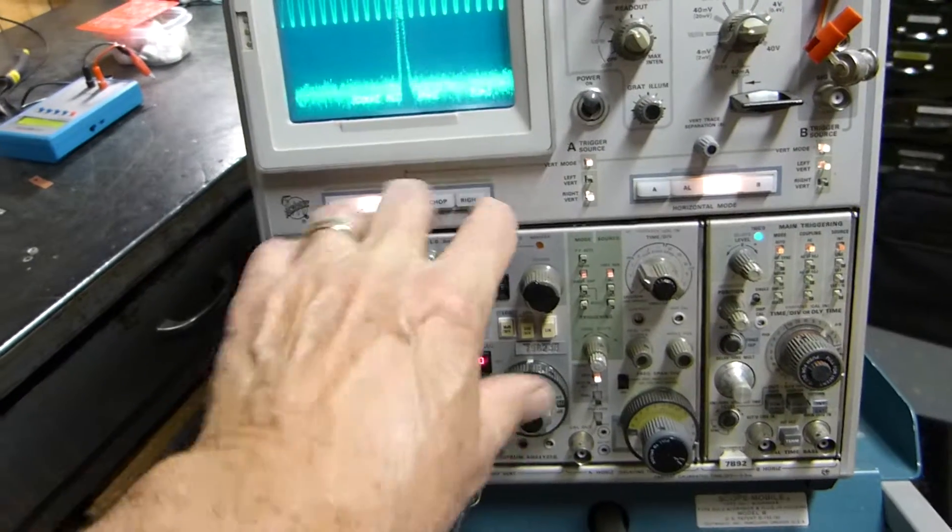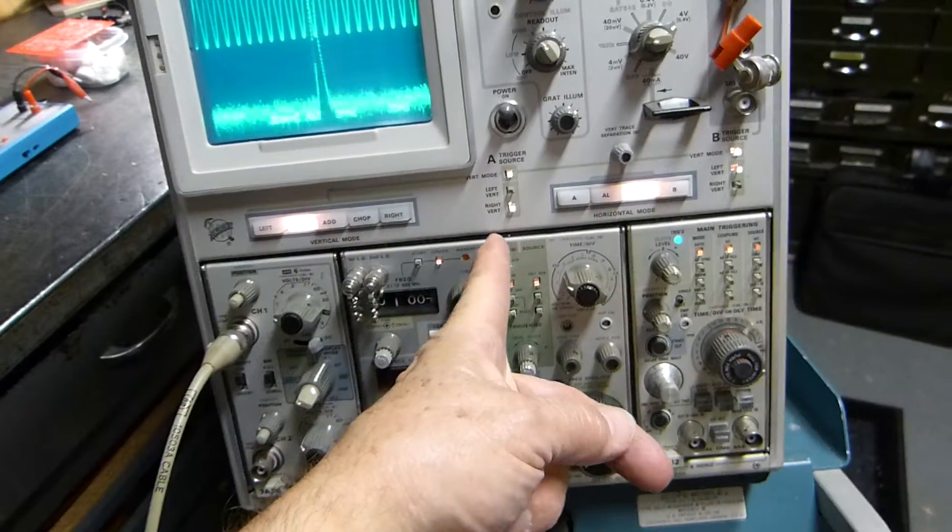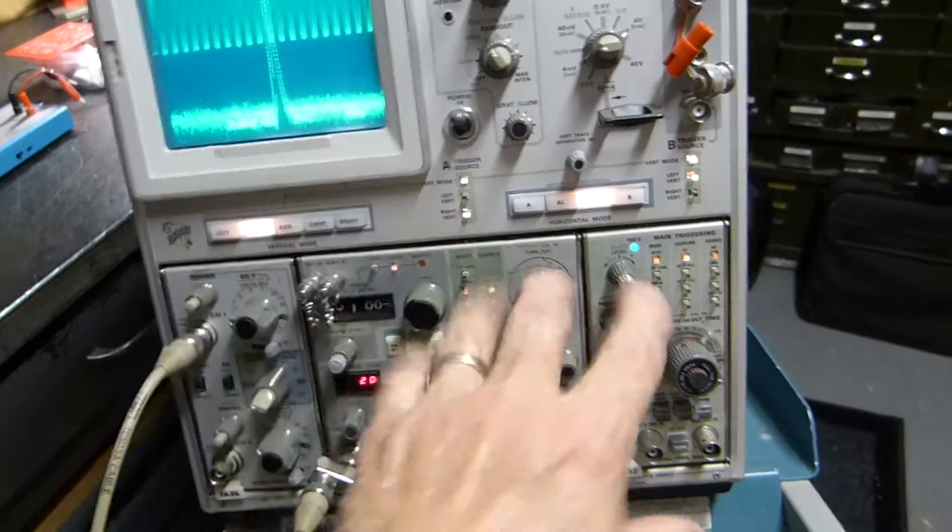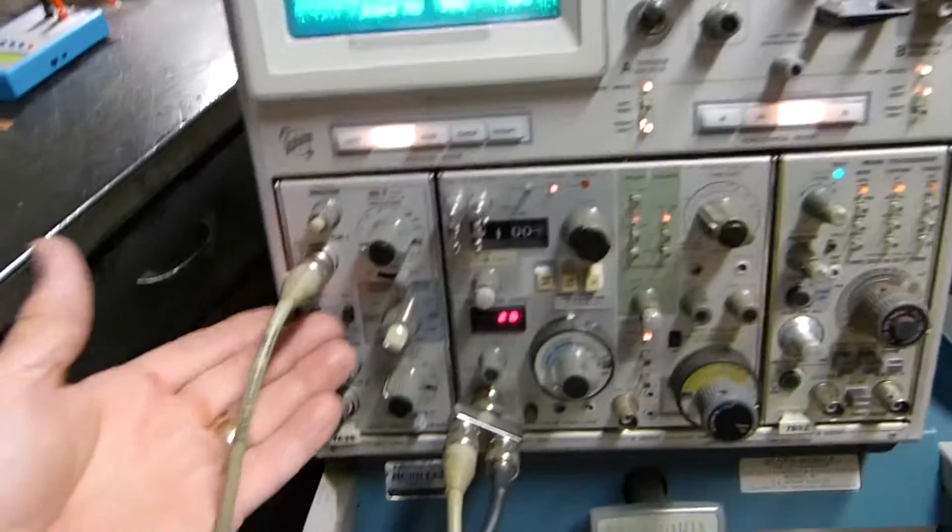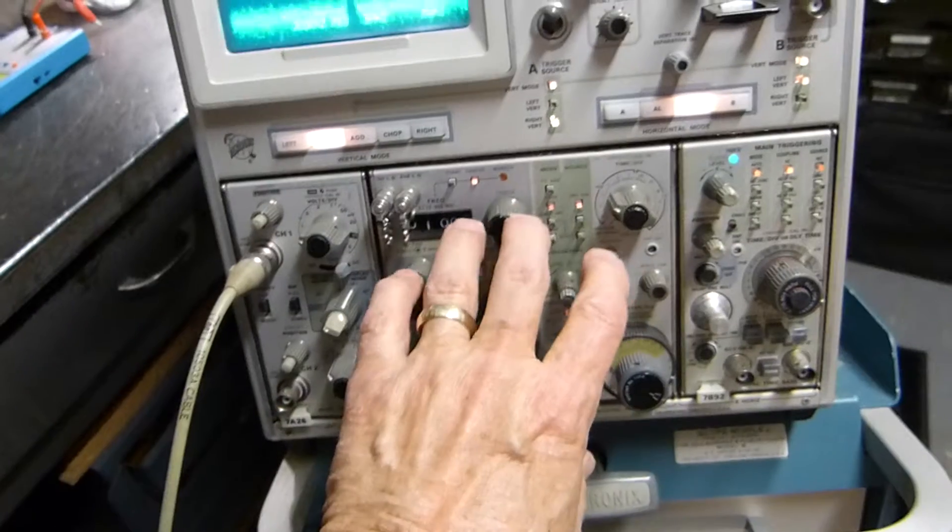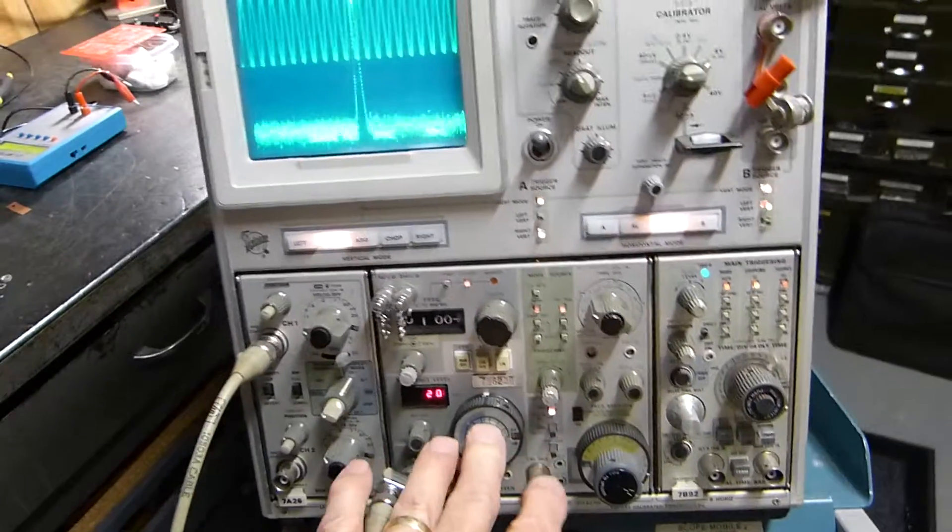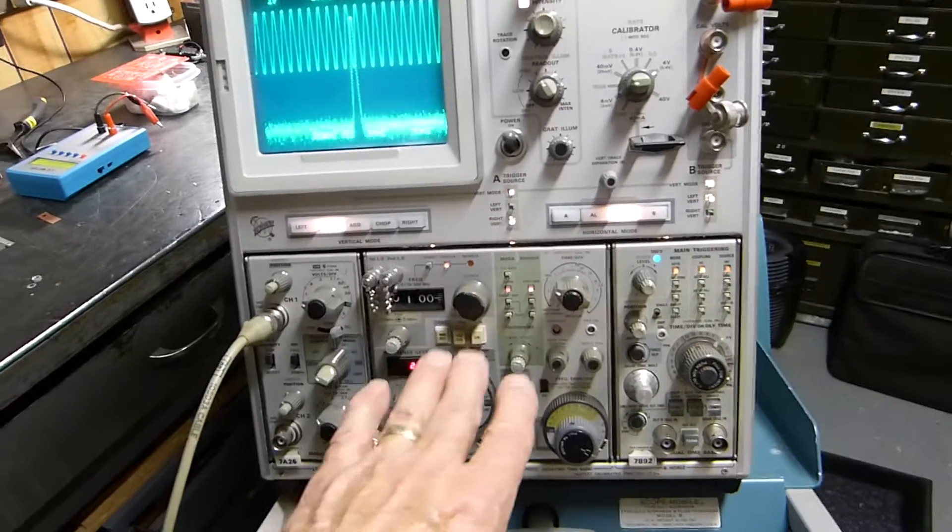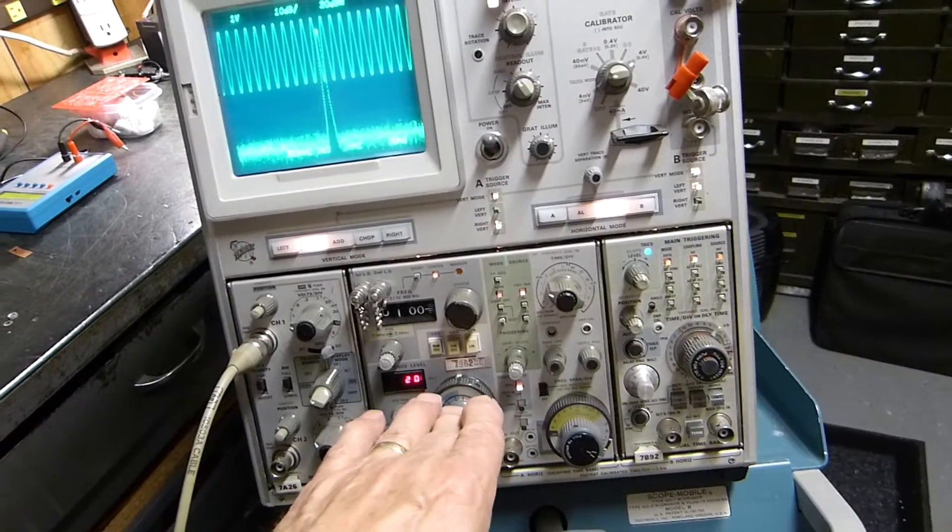These two slots right here, I've made some videos on this oscilloscope before. This slot and this slot are vertical slots, and this slot and this slot are horizontal slots. Well here's a vertical amplifier and here's a spectrum analyzer. They make three spectrum analyzers for this 7000 series: a 7L5, a 7L12, which is what this is, and a 7L18 I believe.